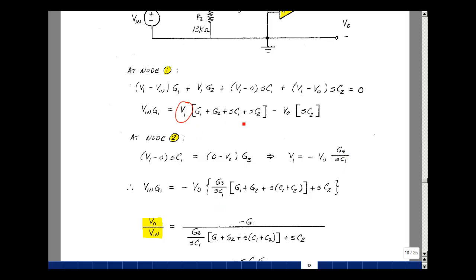Vin G1 is going to be equal to minus Vout times G3 over SC1 times this quantity, which is G1 plus G2 plus SC1 plus SC2. I also have a minus Vout, bring that out in front here, times SC2.